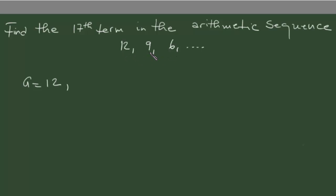And if you subtract 9 from 12 you're gonna have minus 3, and 6 from 9 because it means that the first term is 12, the second is 9, the third is 6. So our common difference here is minus 3.